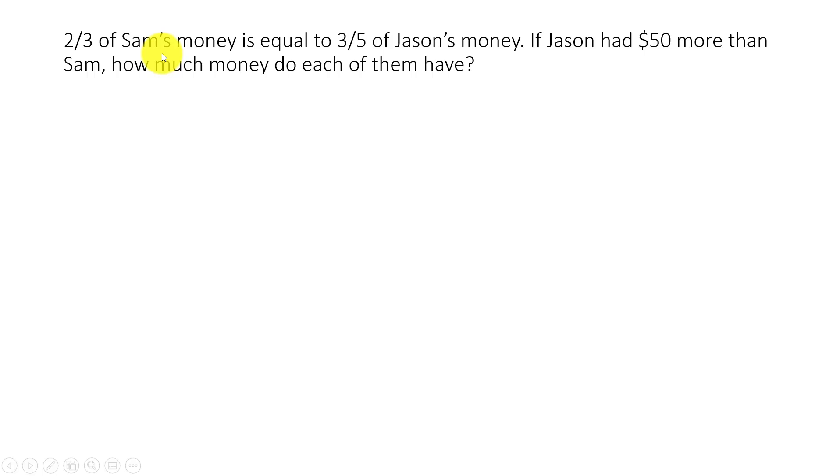We are trying to write algebraic statements for these word problems. At the beginning, we need to make some assumptions. We don't know how much money Sam has and how much money Jason has. Let's assume Sam's money is represented by X - X is the total amount of Sam's money. And Jason's money is represented by Y. Y represents the total amount of Jason's money. Keep this in mind, this is critical.